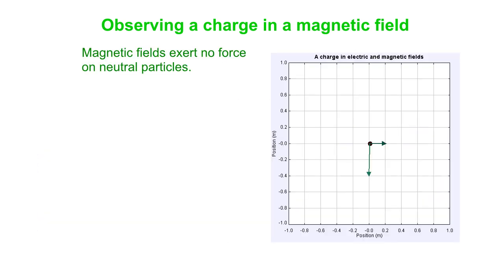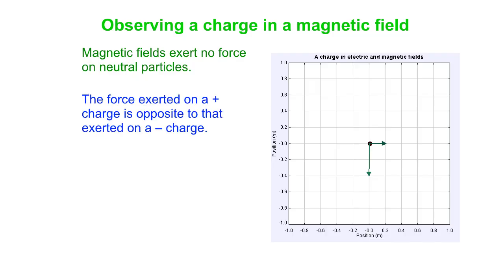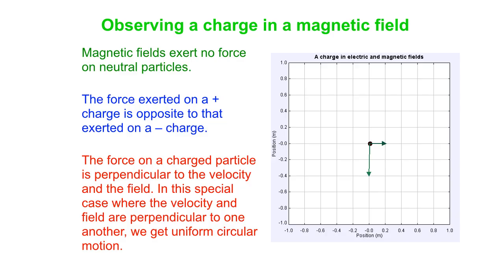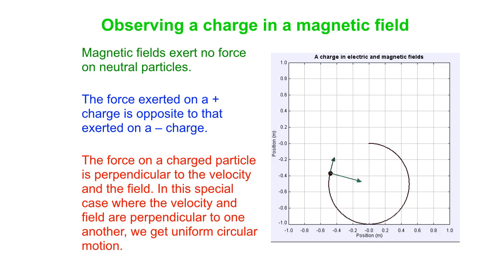To summarize what we've observed: magnetic fields exert no force on neutral particles. The force exerted on a positive charge is opposite to that on a negative charge — both also true for electric fields. But very differently, the force on a charged particle is perpendicular to the velocity and perpendicular to the field. In the special case where velocity and field are perpendicular to each other, you get uniform circular motion.